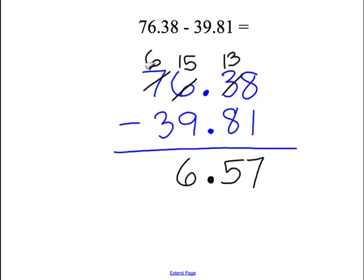To finish off this problem we simply subtract 3 from 6. 6 minus 3 is 3. The solution to this problem is 36 and 57 hundredths. Pay special close attention to how all the decimals are lined up on top of one another.